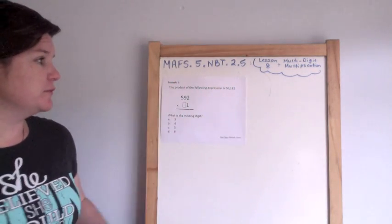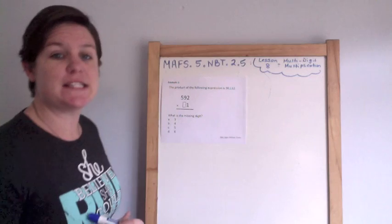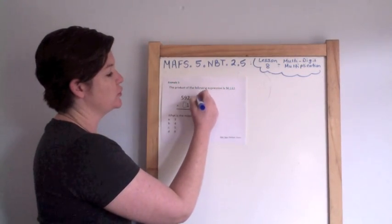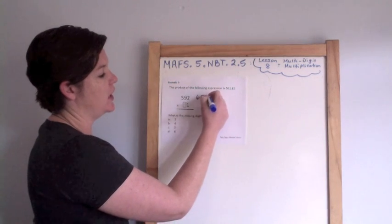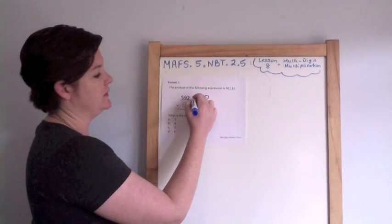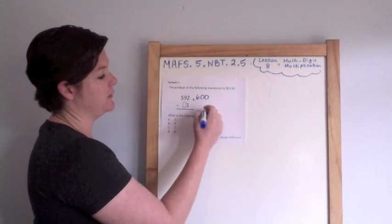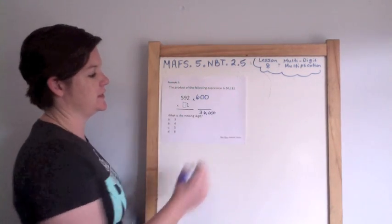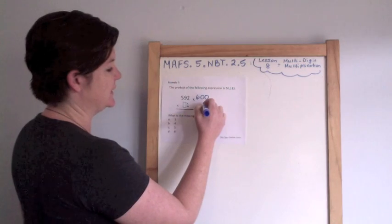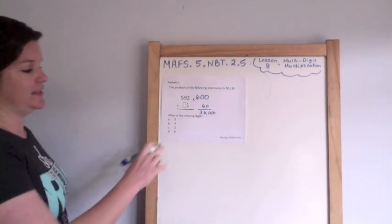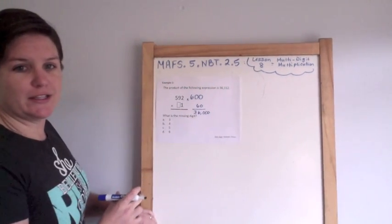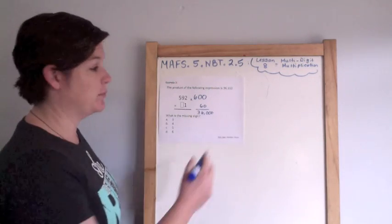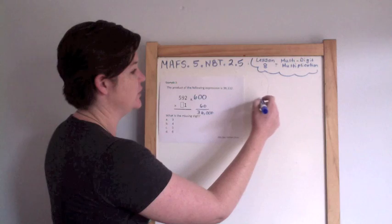So what I'm going to do first is estimate. I know that 592 is pretty close to 600, and I need to multiply by something that will give me something that's close to 36,000. So I'm going to guess something that's about 60, and look, D says 6. So I'm going to plug in 6 to this and see if I get that product, and if not, I will adjust.